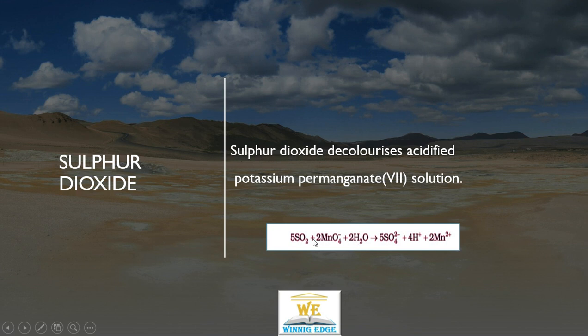Manganese 7-positive gets reduced to Manganese 2-positive, and Sulphur gets oxidized.